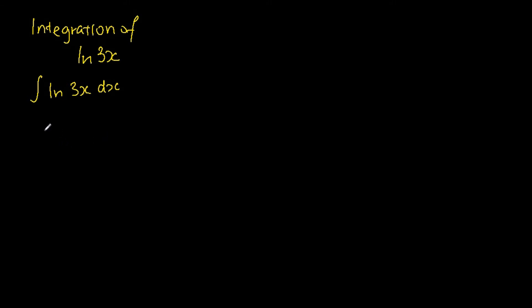For this particular problem, we will use the technique called integration by parts. Integration by parts uses the formula: the integral of u dv, which is equivalent to uv minus the integral of v du.